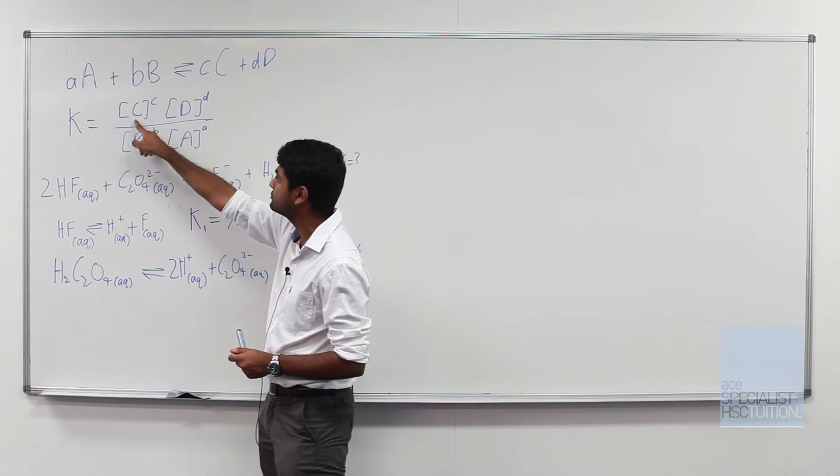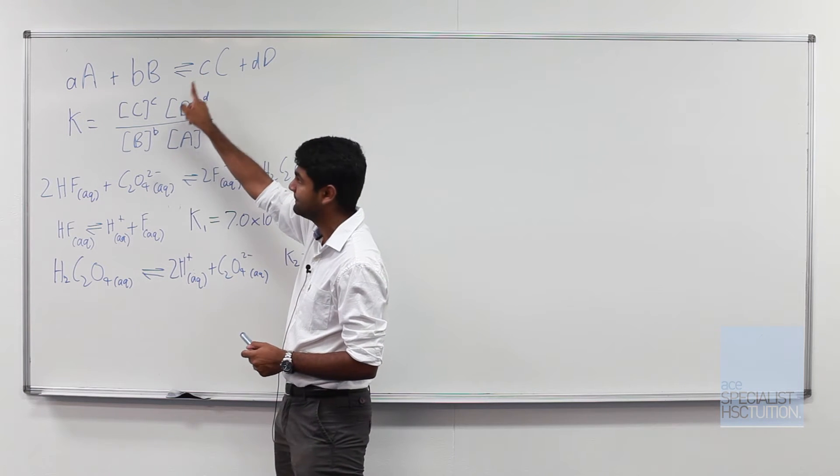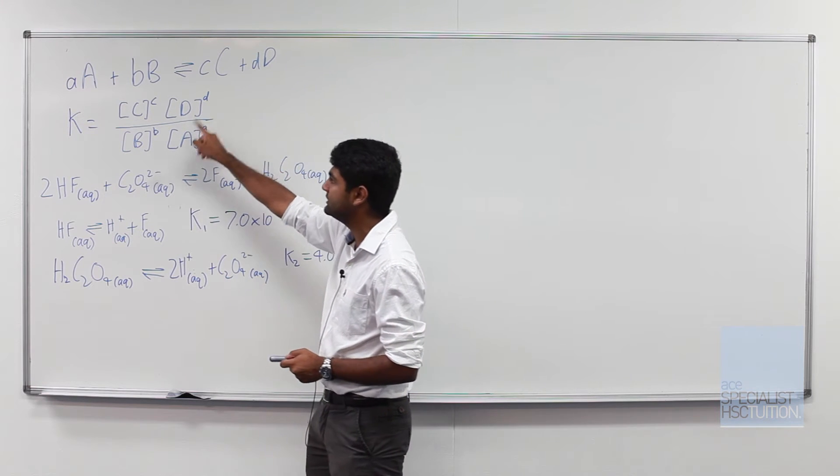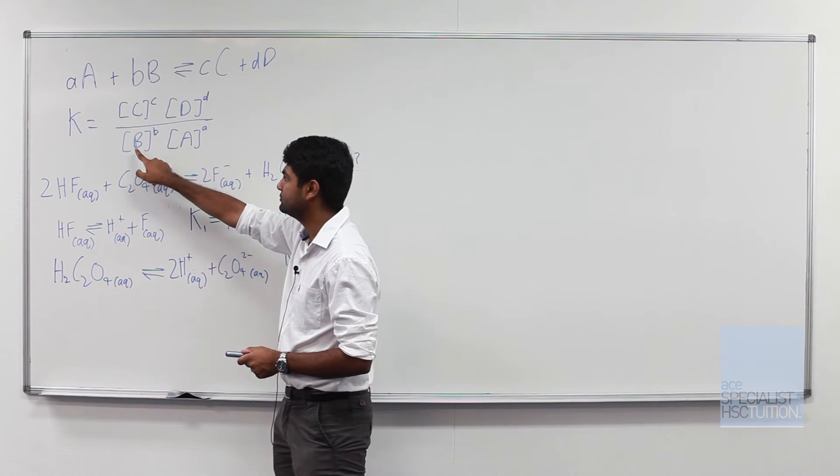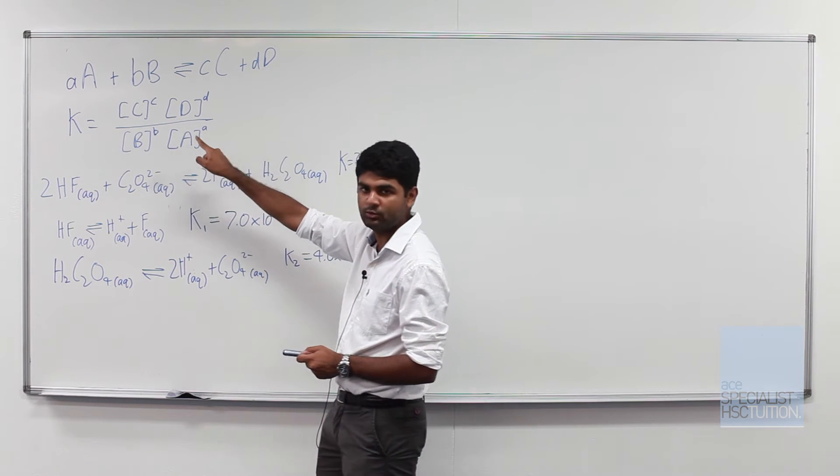So in this situation will be the concentration of C to the power of the molar ratio of C, which is small C, multiplied by concentration of D to the power of small d, all over concentration of B to the power of small b multiplied by concentration of A to the power of small a.